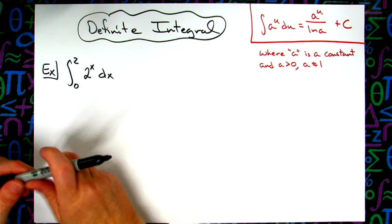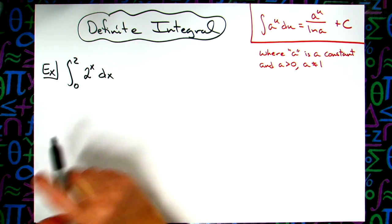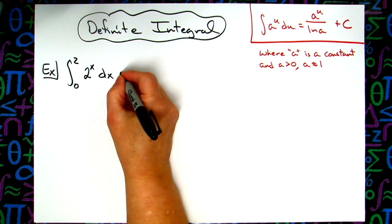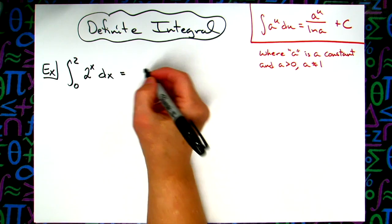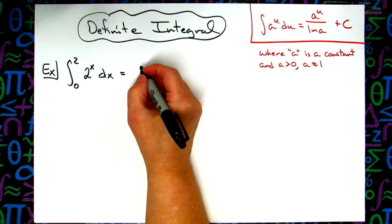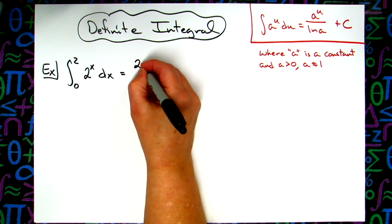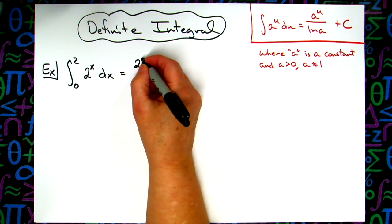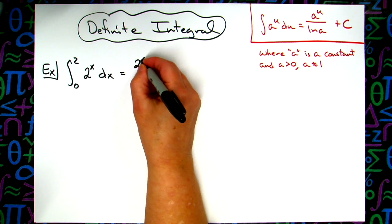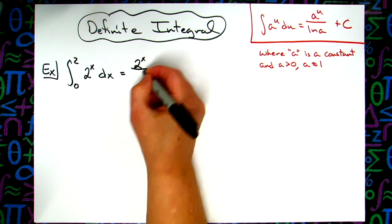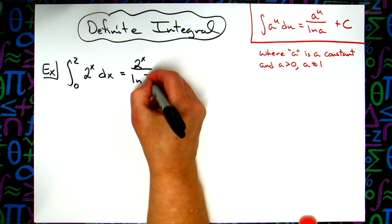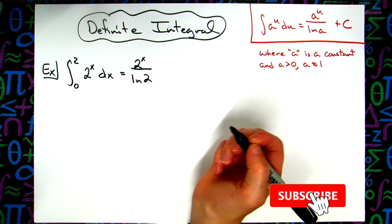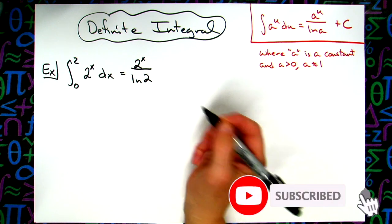So the first thing we're going to do is just do a straight integration. I'm going to have 2 to the x all over the natural log of 2 — so there's my integration.